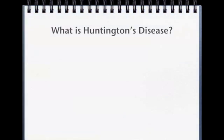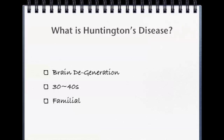So, what is the Huntington's disease? It is basically a disease that causes the brain to degenerate, causing uncontrolled movements, loss of thinking, and etc. It usually shows the symptoms around the 30s and the 40s. Also, it is a familial disease, which means that it is family-related and that it is genetically inherited.